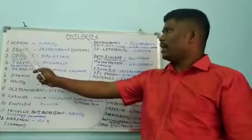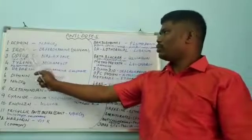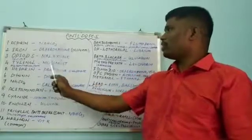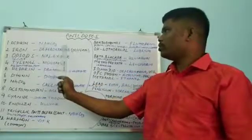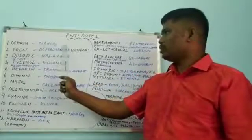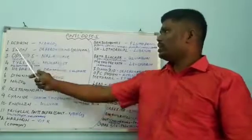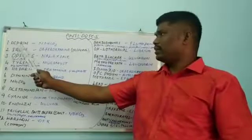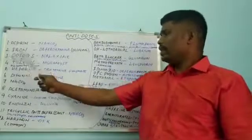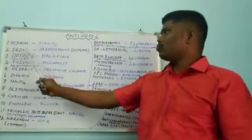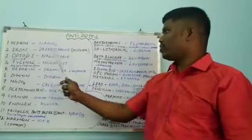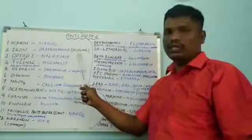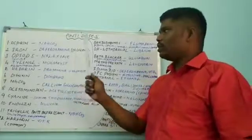First drug is aspirin. In aspirin overdose, sodium bicarbonate or soda bicarb is used as an antidote. Aspirin is an anticoagulant or blood thinner. Second one is iron. In iron overdose, deferoxamine or deferol is used as an antidote.